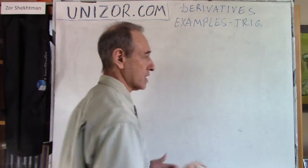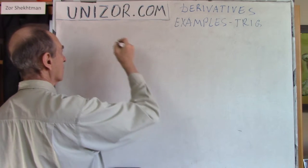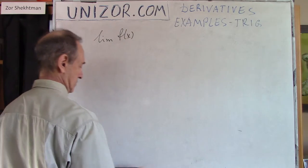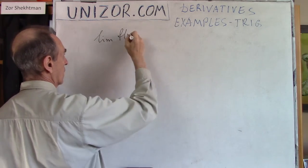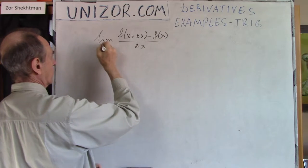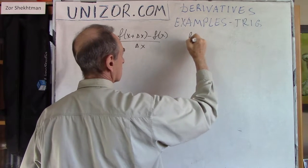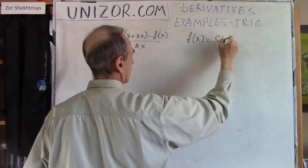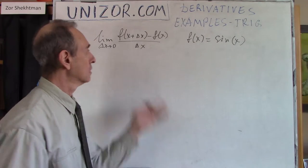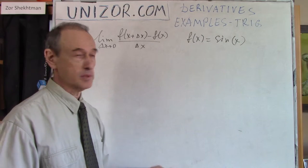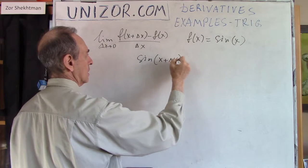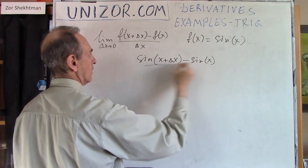So trigonometric functions and how to take derivatives from it. Let's just recall the definition of the derivative: the limit as delta x goes to zero. Now we will consider the function sine. Let's just use this definition and take the direct limit, which is sine of x plus delta x minus sine of x divided by delta x.